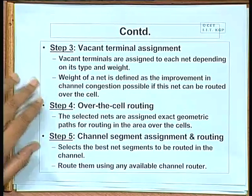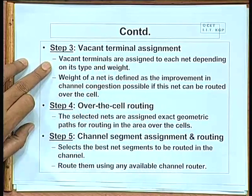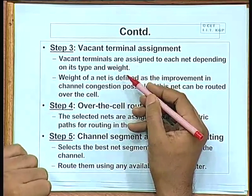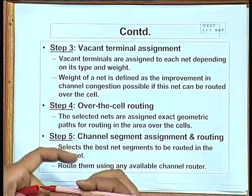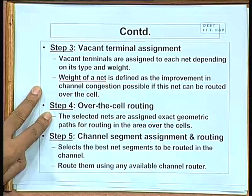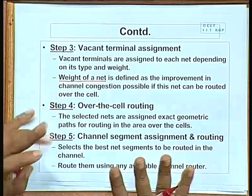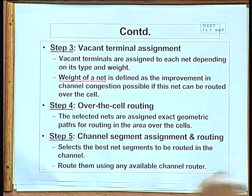You classify the nets depending on the availability of the vacant terminals, then assign the vacant terminals to the nets. There are some heuristics whereby you can give priority to nets. Nets which otherwise lead to congestion in the channel are given higher priority — if you can route them over the cell, you reduce the congestion. You can define some kind of weight for a net depending on the channel congestion it creates in a conventional channel router route.